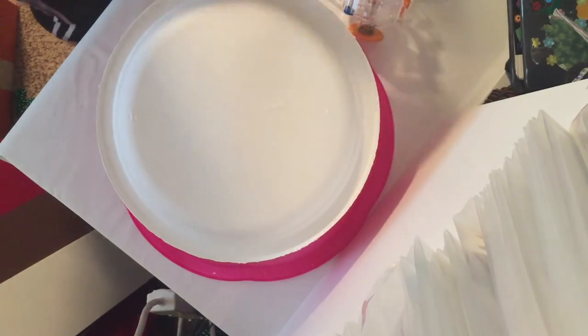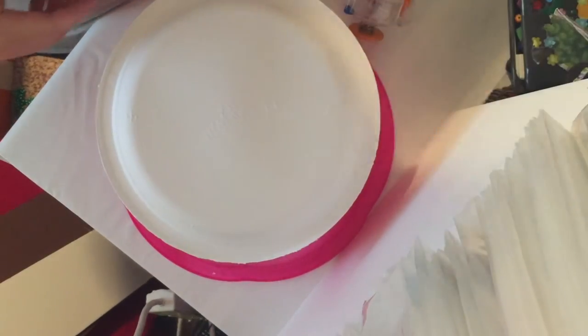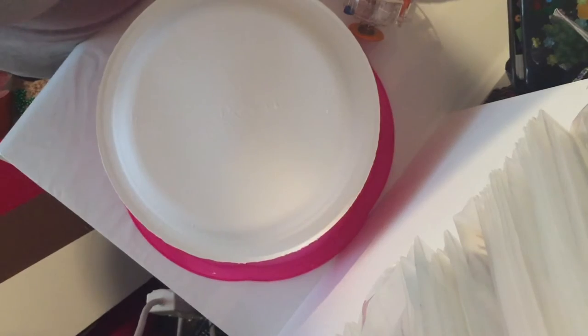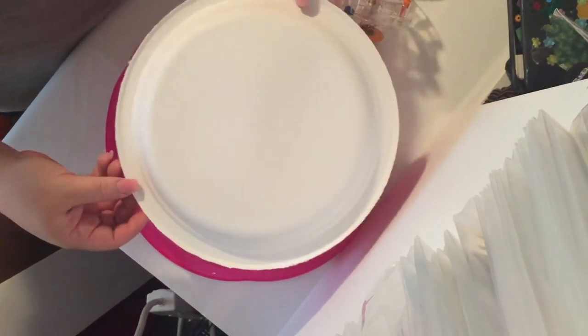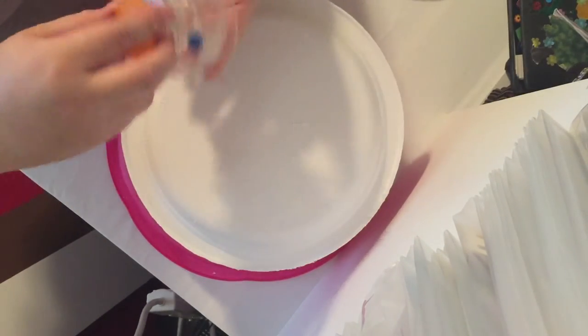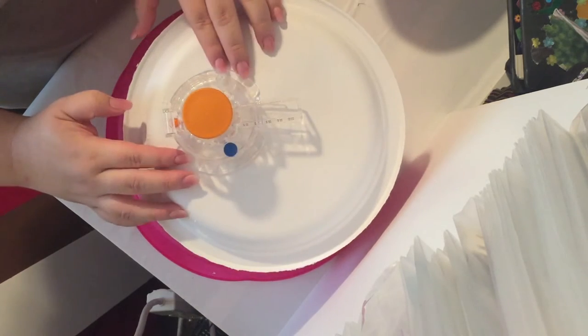Place the plate onto the bottom of the bowl on top of the foam board. Then you're going to kind of offset it because you don't want the circle in the middle of the plate.